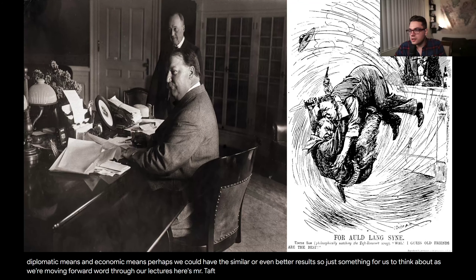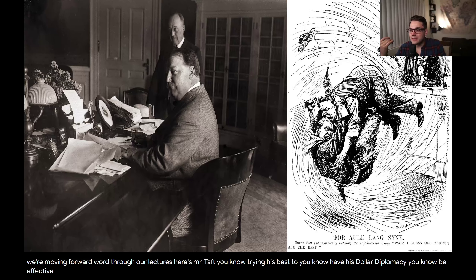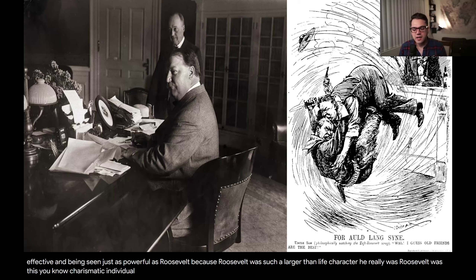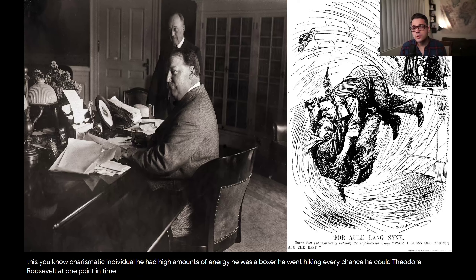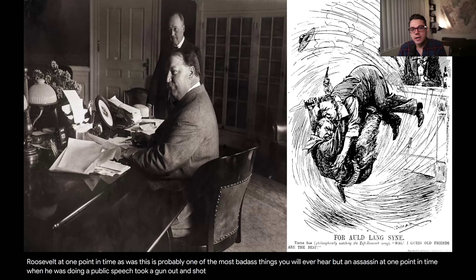Here's Mr. Taft trying his best to have his dollar diplomacy be effective and be seen just as powerful as Roosevelt's, because Roosevelt was such a larger-than-life character — charismatic, high energy, a boxer who went hiking every chance he could. Theodore Roosevelt at one point, probably one of the most badass things you'll ever hear: an assassin at one of his public speeches took a gun out and shot him. It hit his rib cage, the wound was there and he was bleeding.